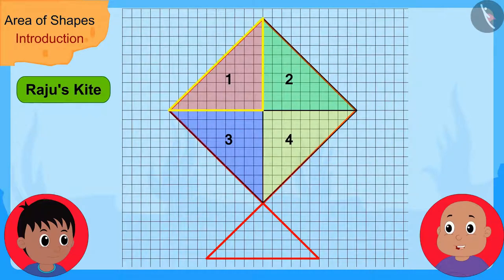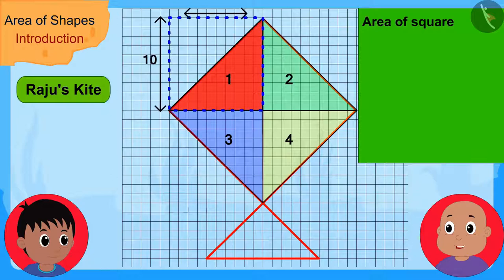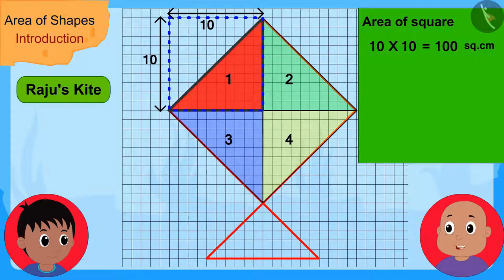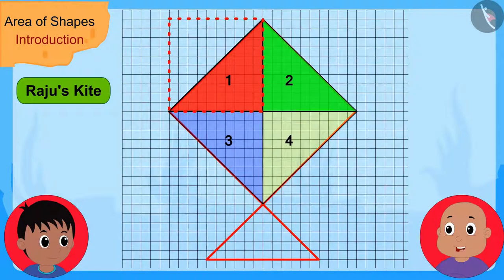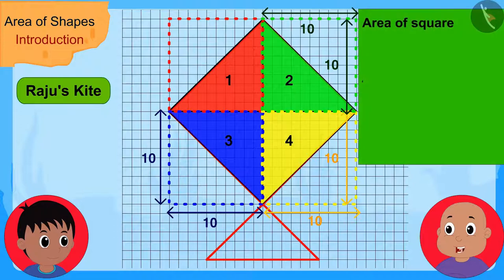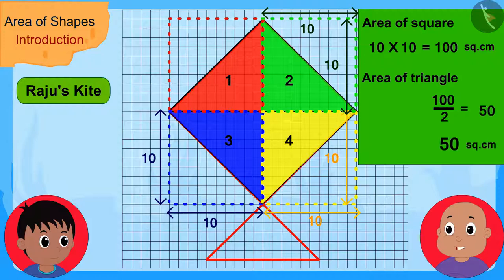Bablu explained, "Look Raju, this triangle inside the outline of your kite is half of this square. The area of this square is 10 times 10, or 100 square centimetres. So the area of this triangle is 100 divided by 2, or 50 square centimetres. In exactly the same way, these 3 triangles are also half of these 3 squares, and their area is also 10 times 10, or 100 square centimetres. Therefore, the area of each of these 3 triangles is also 50 square centimetres."